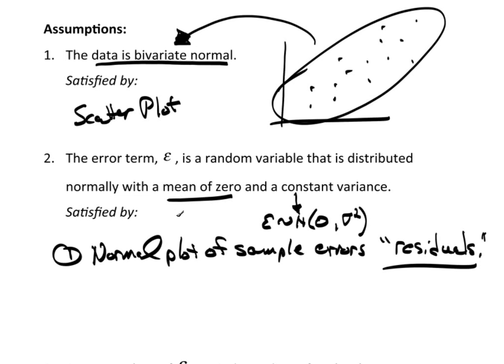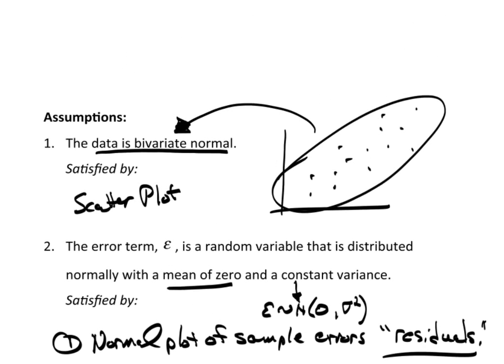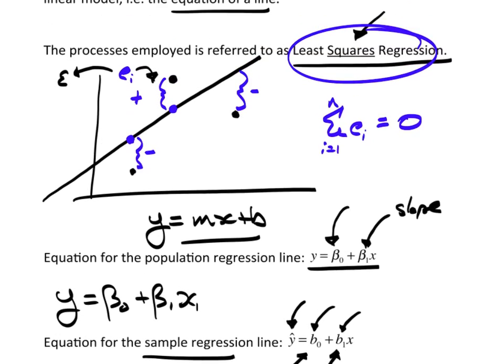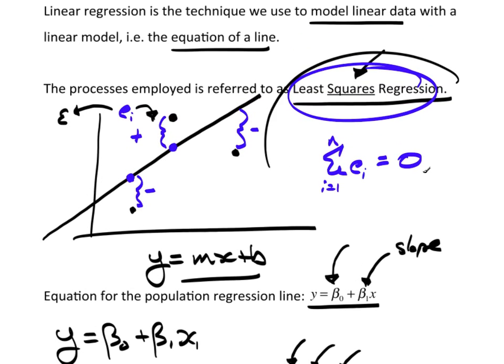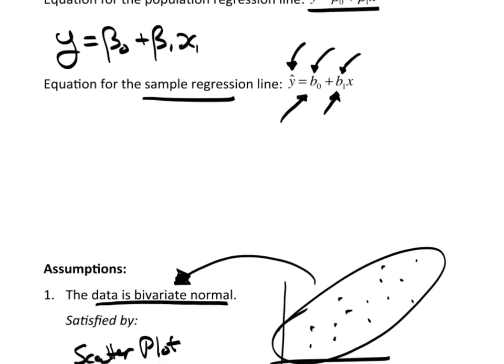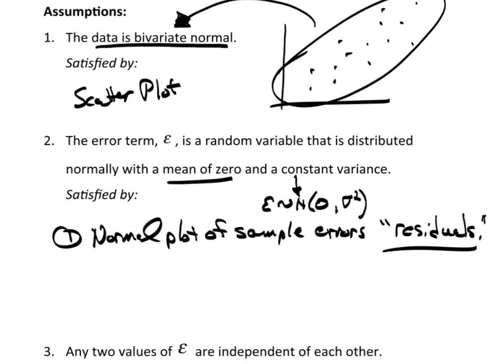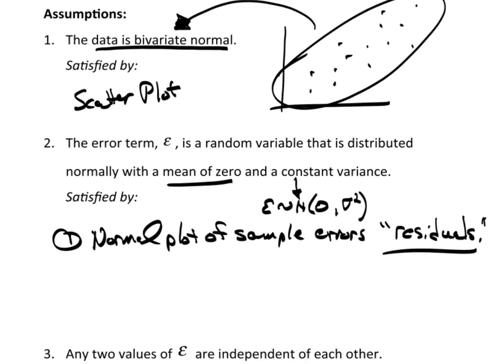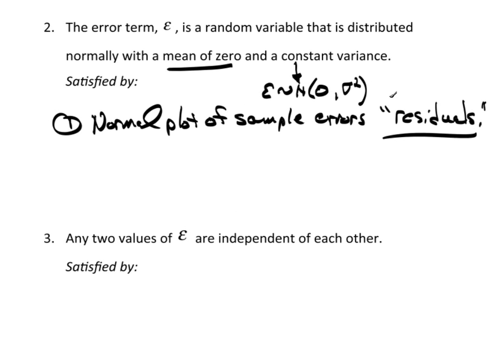The mean of zero is guaranteed. That has to happen because of the least squares regression. The mean will always be zero. So, there's really nothing to check there. That is a mathematical guarantee.